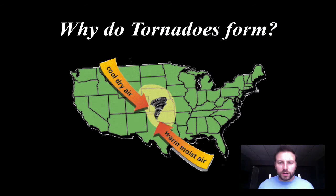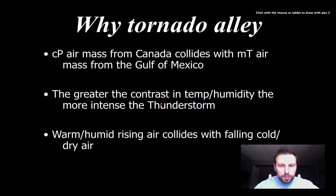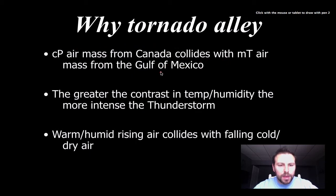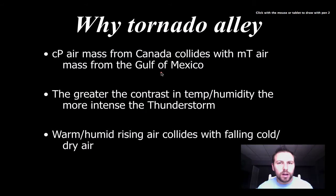This diagram is very similar to what I just showed. We have that continental polar air mass coming from Canada — that cold dry air mass — colliding with that warm moist air from the Gulf of Mexico. Because there is such a difference in temperature and humidity, it allows for a pretty intense thunderstorm and extremely unstable air mass. That cold air comes in, the warm air goes up and over it — unstable air with extreme low pressure associated with it.